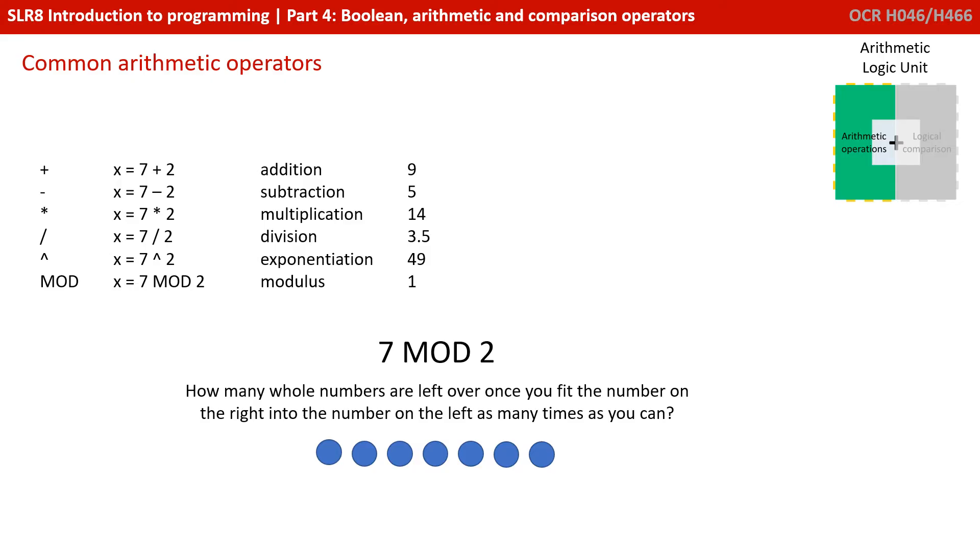We then have modulus. This one is one which candidates are often unaware of. When you write it in the exam, we use the word MOD. Different languages sometimes use different symbols. MOD performs a modulus—it means how many whole numbers are left over once you fit the number on the right into the number on the left as many times as you can. So if we've got x equals 7 MOD 2, how many whole times can we fit 2 into 7? We can fit it in three whole times. What's left over is 1. So that's what modulus returns—it returns what's left over.